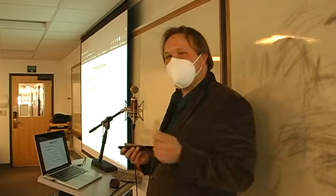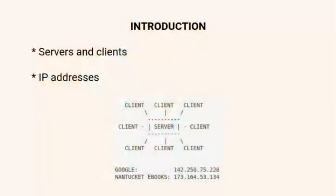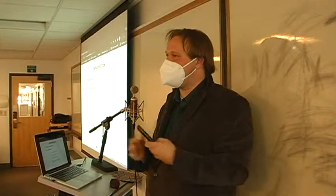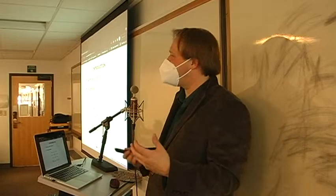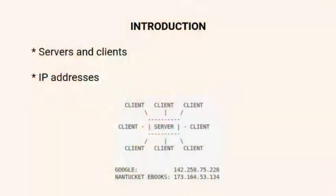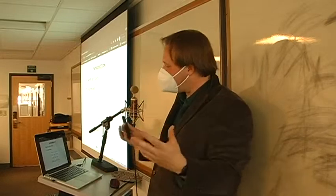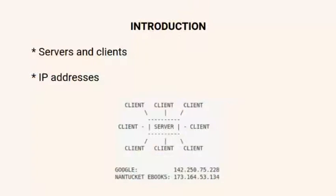The first thing to talk about is the idea of servers, clients, and IP addresses. Basically, the way the web works is that you have servers that have information on them, and then you have clients - which could be your computer, smartphone, or even your watch - and those make a request to the server for information. The server will serve the HTML file back to the client, and their browser renders it. Servers can talk to each other and clients can upload information to the server - it's a two-way exchange. That's essentially the server-client model.